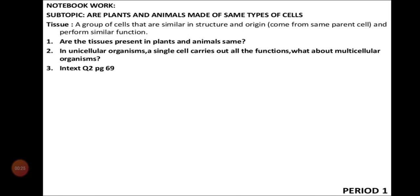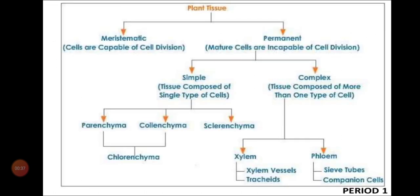So, what is tissue? A group of cells will make a tissue, many tissues will make an organ, an organ will make an organ system, and an organ system will form organisms. We have learned about the concept map regarding plant tissue.